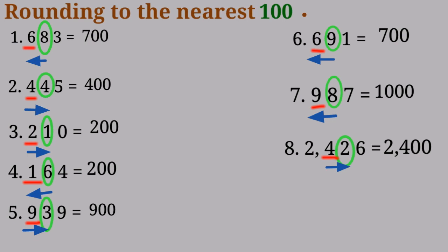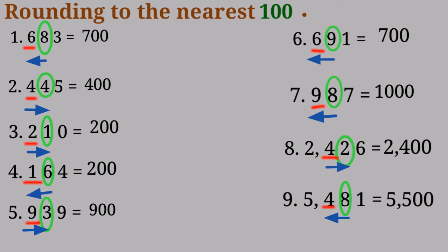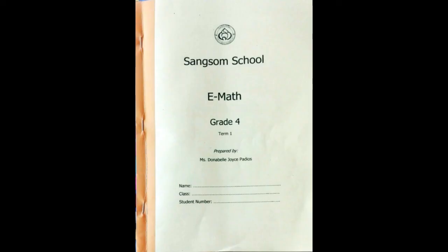Number 9: 5,481. 4 is in the hundreds place and 8 is in the tens place. Because 8 is a rounding up number, it has the power to push the 4 up. Now 8 and 1 turn to 0, and it will become 5,500. Now it's your turn — good luck!